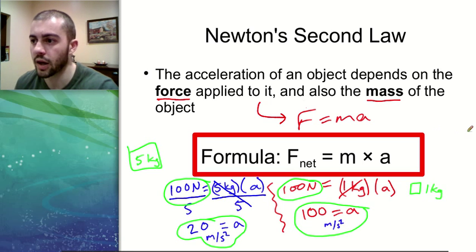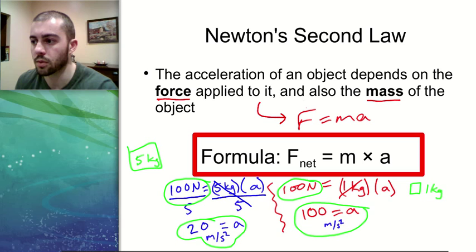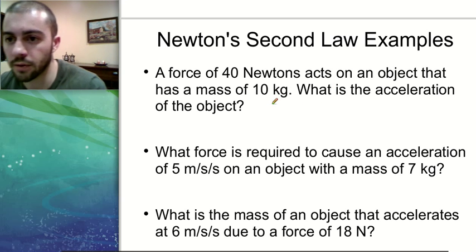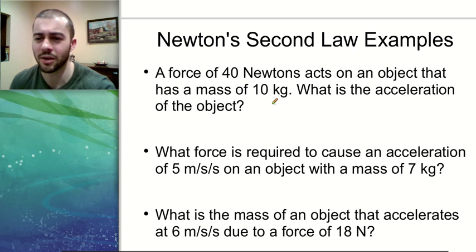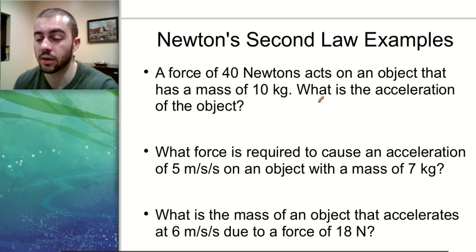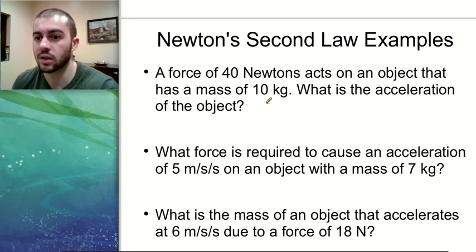This is just a brief introduction into how Newton's second law works. In terms of working out Newton's second law problems, we can use the formula F equals MA to calculate information depending on what we're given. Looking at this first example, if you think you're great with the F equals MA formula right now, maybe pause the video and try these examples out on your own. I'm going to work them out individually here.